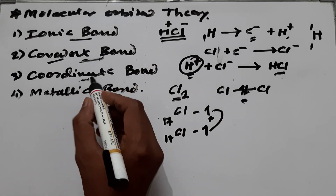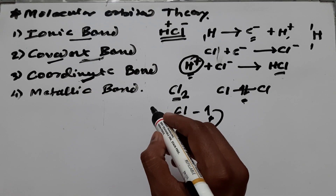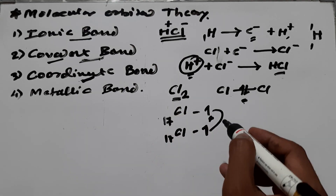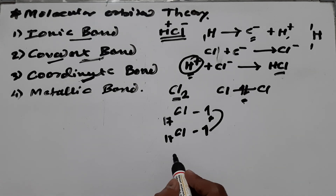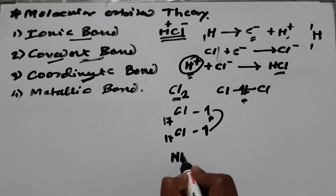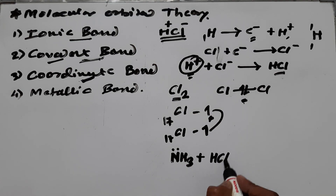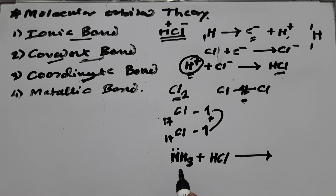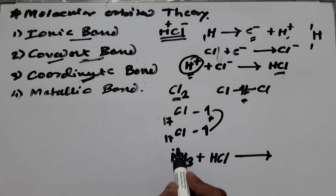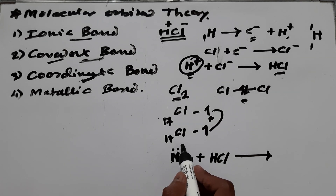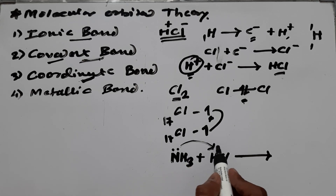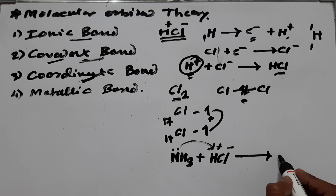The coordinate bond is sometimes called the coordinate covalent bond or covalent coordinate bond. The best example is NH3 reacting with HCl — a simple acid-base reaction. Nitrogen in NH3 has a lone pair and acts as a Lewis base, meaning it can donate its lone pair. The lone pair attacks H positive (from HCl), because H is electron-deficient. The bond formed between nitrogen and hydrogen is the coordinate bond, shown with an arrow from nitrogen to hydrogen.